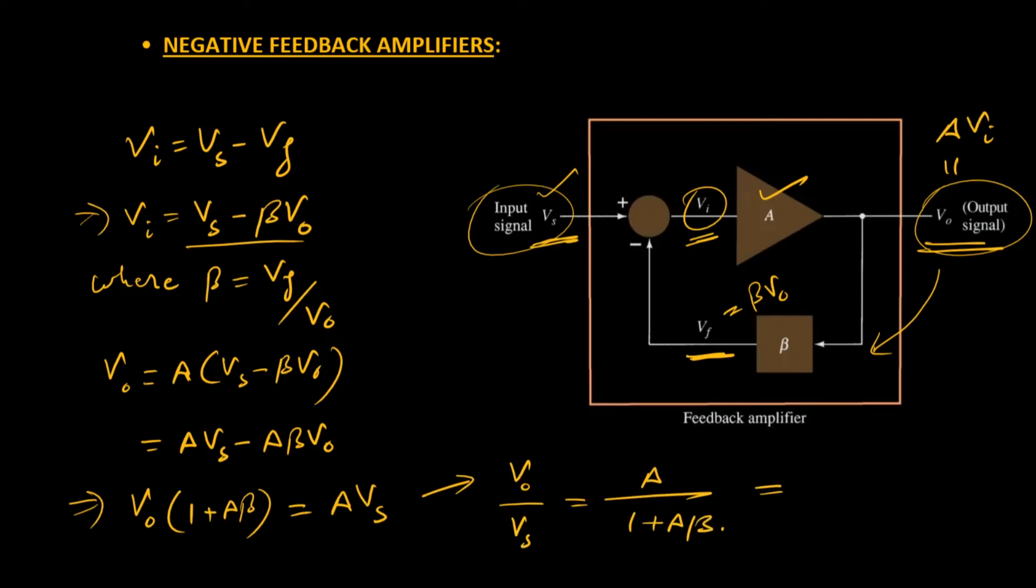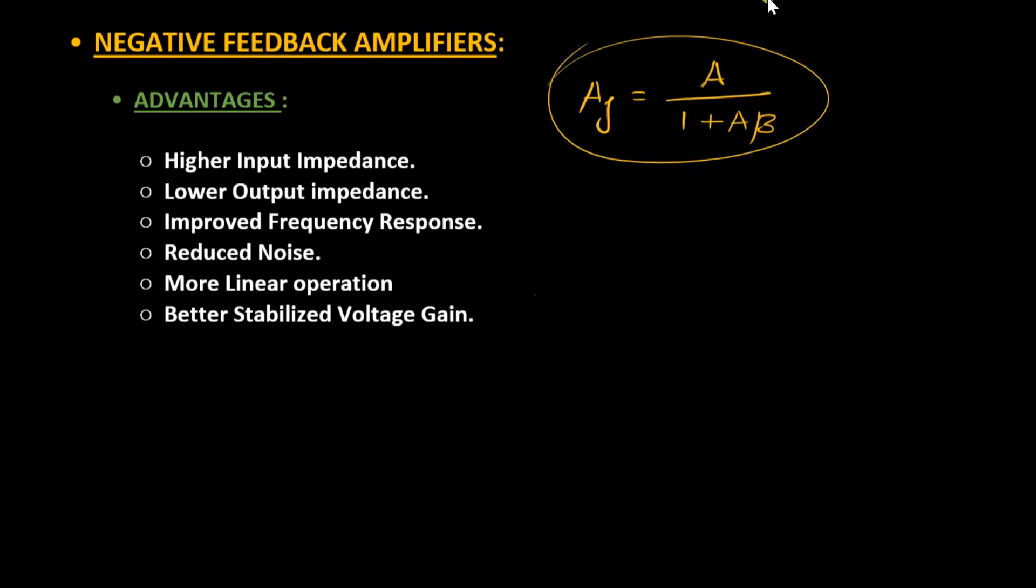Rearranging this equation, we can write V0 over Vs equals A over (1 plus A beta). We know that V0 is the output potential and Vs is the input potential, so output over input is the voltage gain. I can represent this voltage gain as Af. So this is the final voltage gain of this negative feedback amplifier. From this equation we can clearly see that it could have been simply A if no feedback were there, but as feedback circuitry is introduced, this gain A is being divided by the factor 1 plus A beta. So we are having better control and better stabilization on gain, or the gain is reduced by this factor 1 plus A beta.